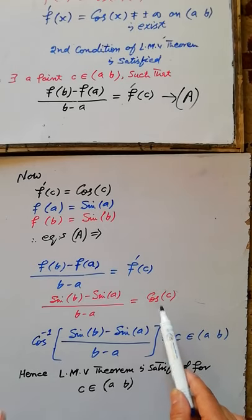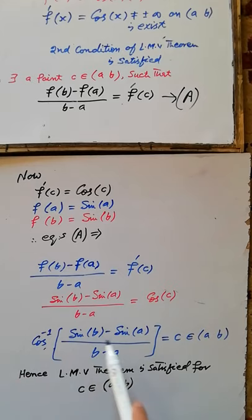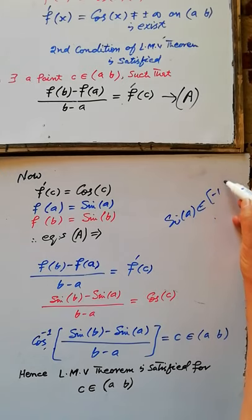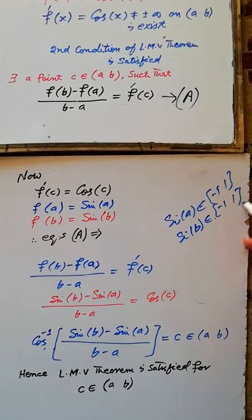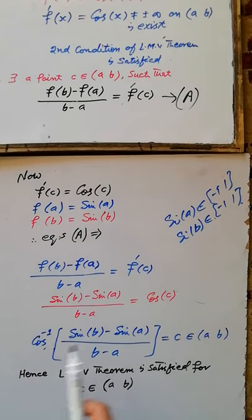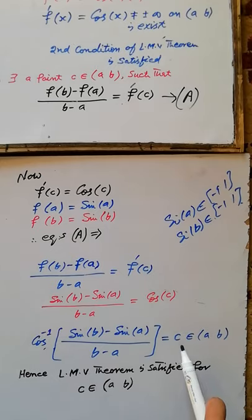Therefore, c = cos⁻¹([f(b) - f(a)] / (b - a)) = cos⁻¹([sin(b) - sin(a)] / (b - a)), where sin(a) and sin(b) are values contained in the closed interval [-1, 1]. Therefore, [sin(b) - sin(a)] / (b - a) is a real number, and the inverse cosine of this real number gives a quantity c contained in the open interval (a, b). Hence, the Lagrange Mean Value Theorem is satisfied, and the point c is contained in this open interval.